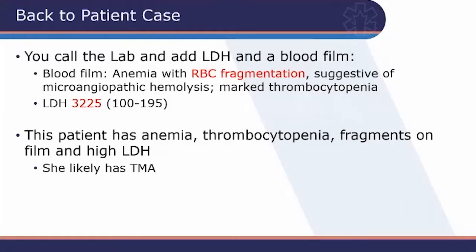You call the lab, add the LDH, add a blood film — and the blood film comes back showing anemia with red blood cell fragmentation suggestive of microangiopathic hemolysis, with marked thrombocytopenia confirmed. LDH is grossly abnormal at 3,200 — way above the reference range. Remember that LDH reference ranges differ across labs, so always mention the range when speaking to an outside consultant. This 50-year-old woman unexpectedly has anemia, thrombocytopenia, fragments on film, and a very high LDH — she likely has TMA. Regarding disposition: her creatinine is grossly abnormal and was previously normal, so she has evidence of organ damage. Consider urine dip for proteinuria or hemoglobinuria, and add troponin. There is no alternative diagnosis — no DIC, no hypertensive crisis, not pregnant, not septic — so you cannot rule out TTP and should refer her.